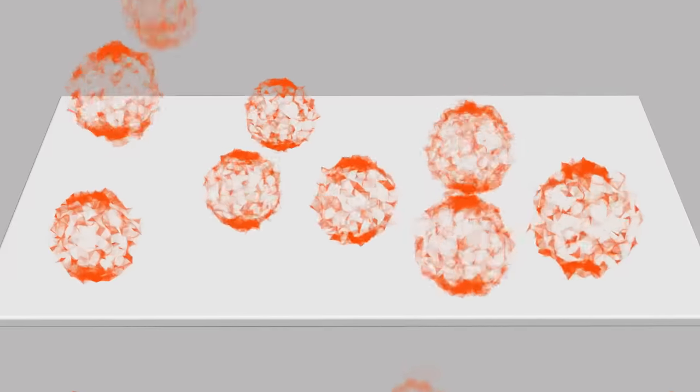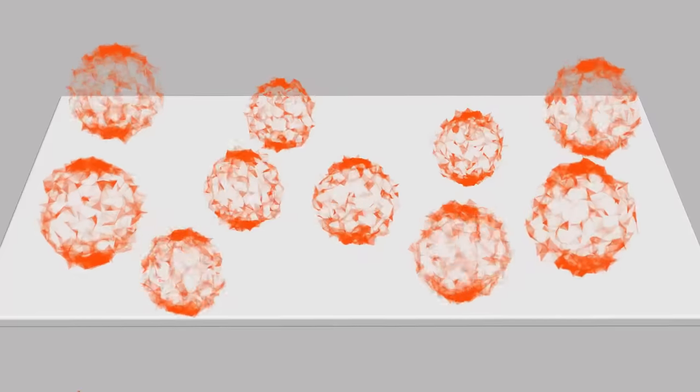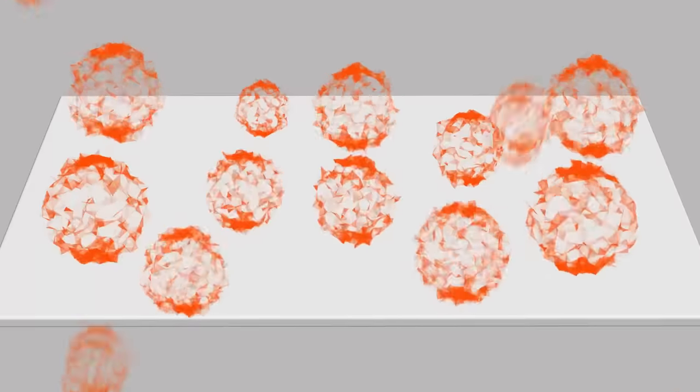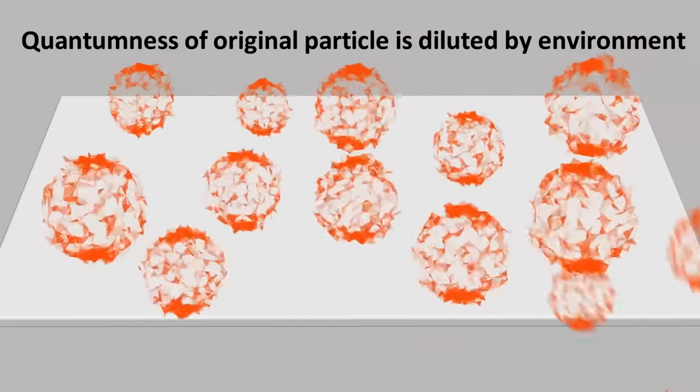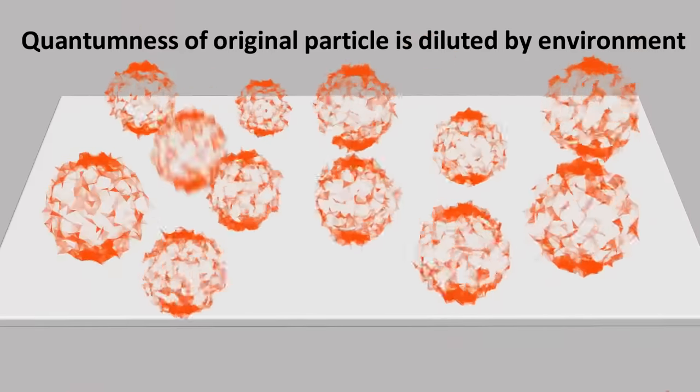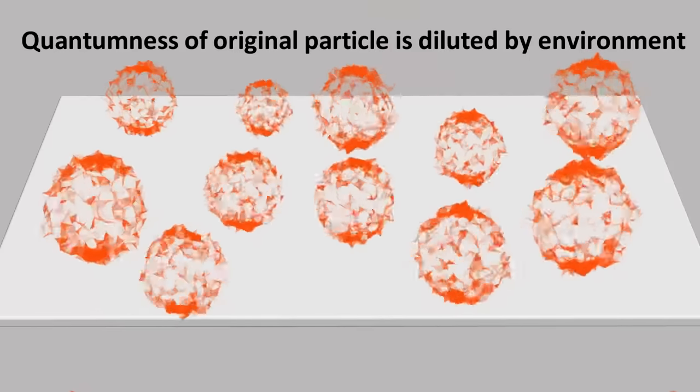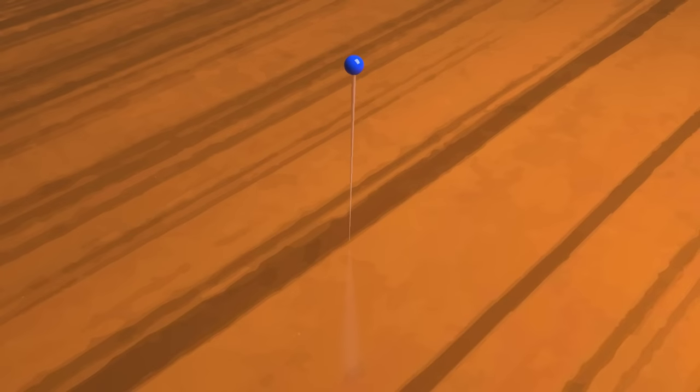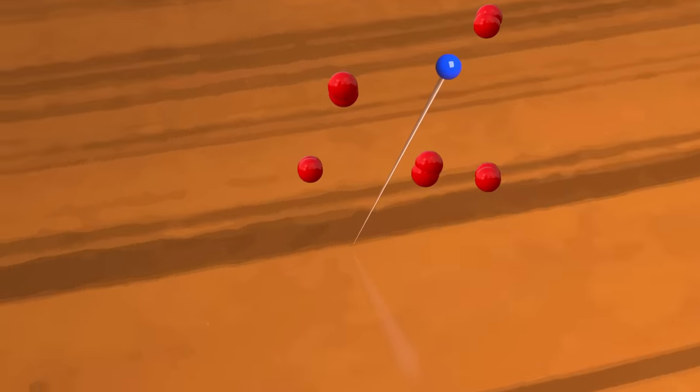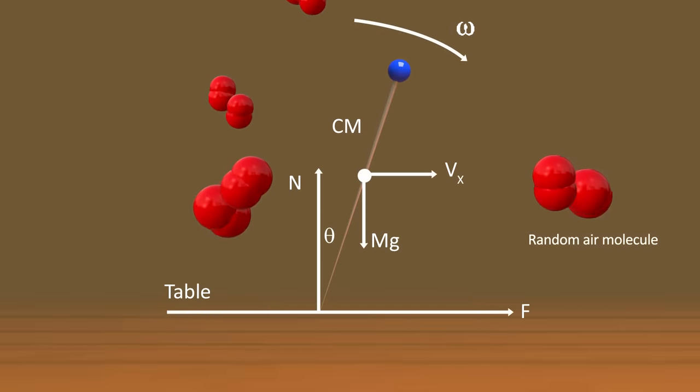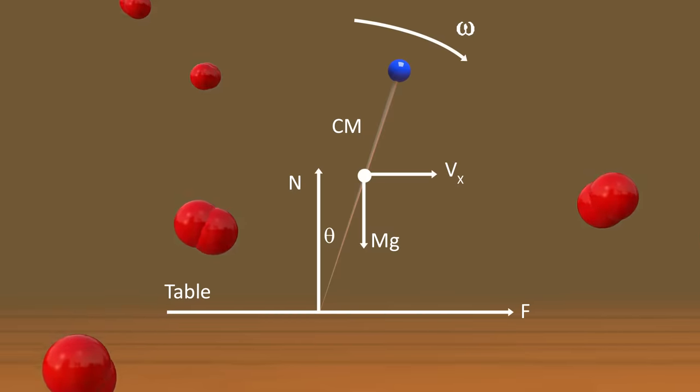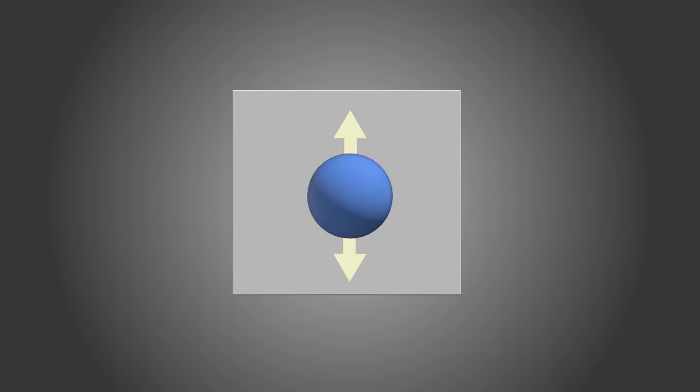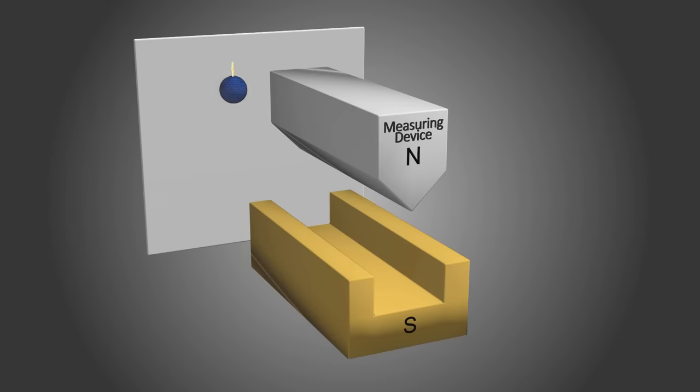This, you might say, dilutes the quantumness, hiding the superposition from plain sight. You can't see it any longer in the original particle. Instead, it turns out that the environment gets imprinted with the effects of just one or the other of the possible spin states, selected at random in much the same way that a needle on its tip will fall in one direction at random. The difference is that where a needle falls is in theory predictable in advance if we know all the molecular interactions and forces acting on the needle. But this is not the case for our quantum object. We cannot know, even in principle, before it happens which way the decoherence will tip the balance.